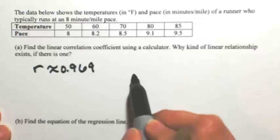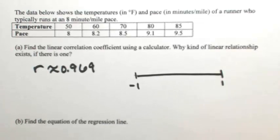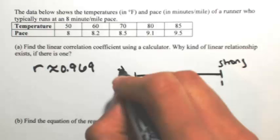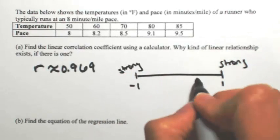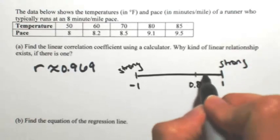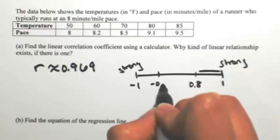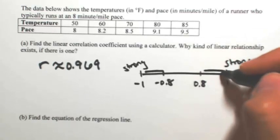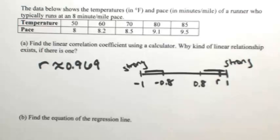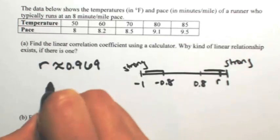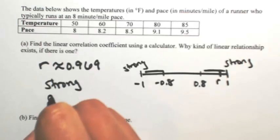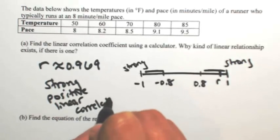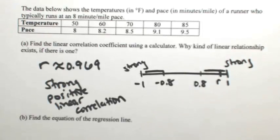Keep in mind that R is always between negative 1 and 1, and negative 1 and 1 represent strong relationships. In general, if you have between 0.8 and 1, or between negative 0.8 and negative 1, you have a pretty strong linear relationship. Since 0.969 falls in the 0.8 to 1 range, this is a strong and positive linear correlation.